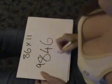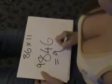So 8 plus 1 equals 9. The answer to 86 times 11 is 946. It's easy.